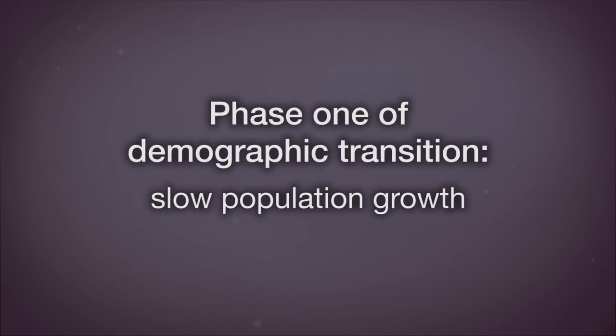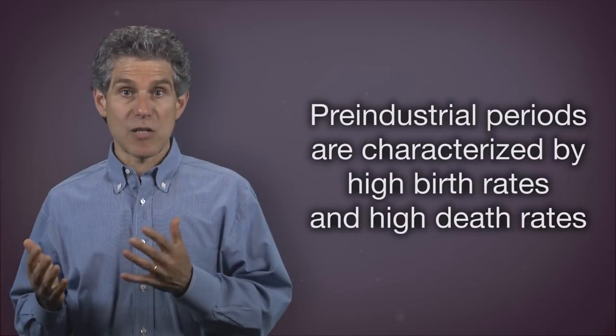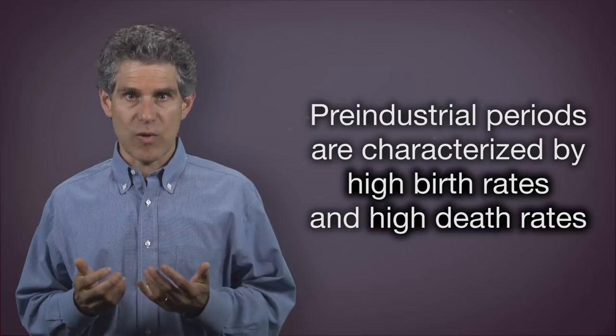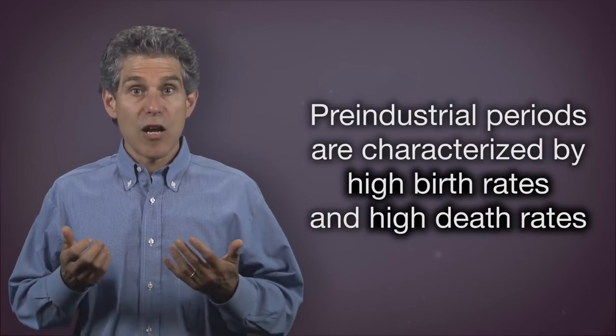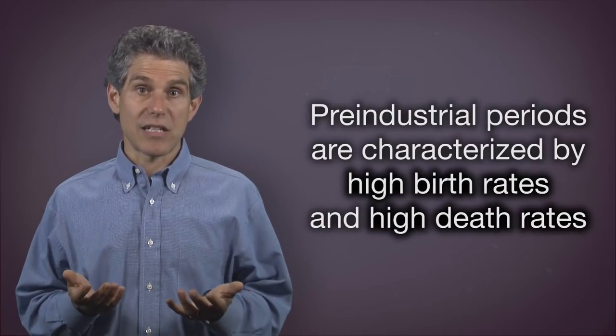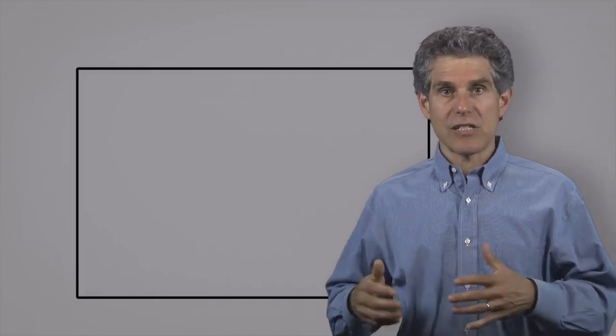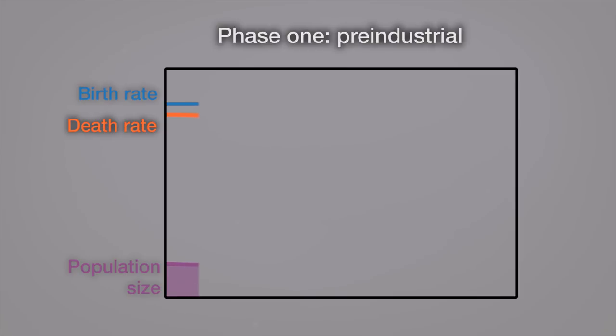Phase one, slow population growth. Pre-industrial periods are characterized by high birth rates and high death rates. The lack of health care, poor sanitation, no access to clean water lead to these high death rates, and those populations have large numbers of children because they typically experience high death rates among children.